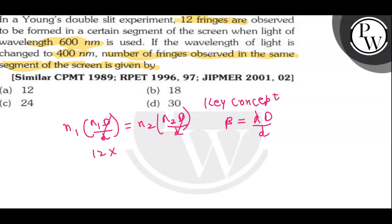which is given as 12, and λ₁ for 12 fringes is 600 nanometer. n₂ we have to calculate, and the other wavelength given is 400 nanometer. Now if we simplify, we get 12 × 600 / 400, so n₂ equals 18.